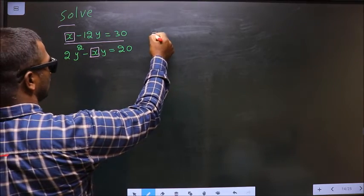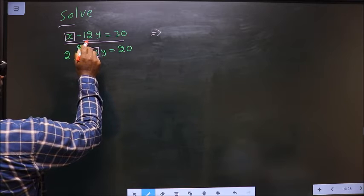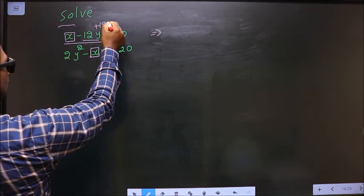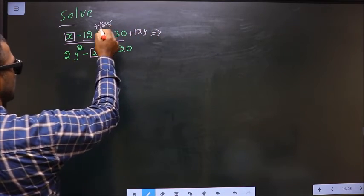So now to get x, minus 12y should not be present here. So to remove minus 12y you add 12y on both sides. So this cancel out.